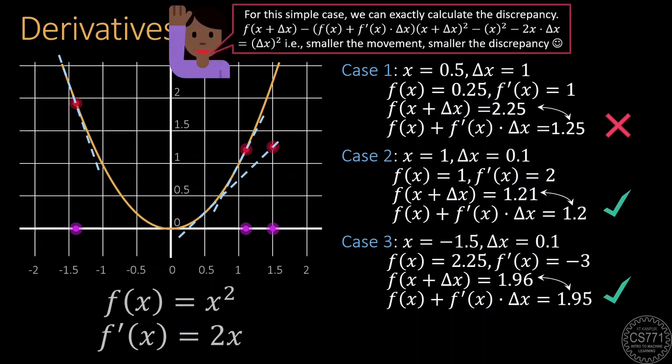Actually, for the simple function, it is easy to see that our approximation error is directly linked to how much we moved. If we move Δx, then our error would be Δx², which confirms that this trick is guaranteed to work if we move a tiny bit.